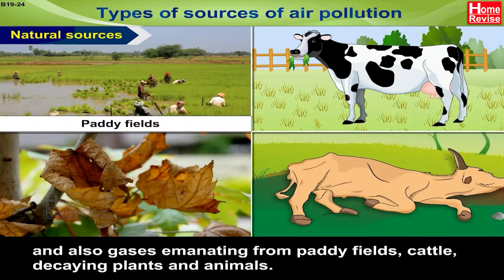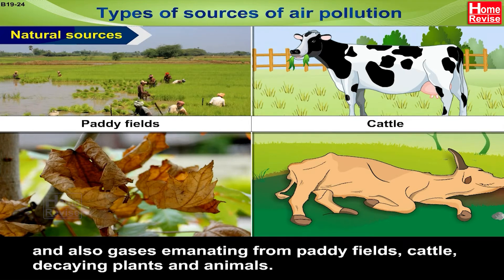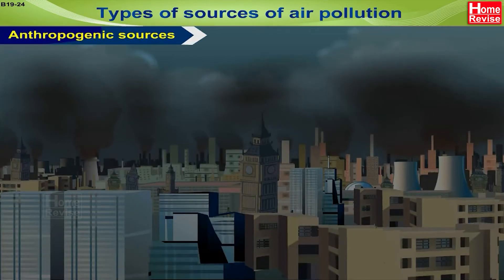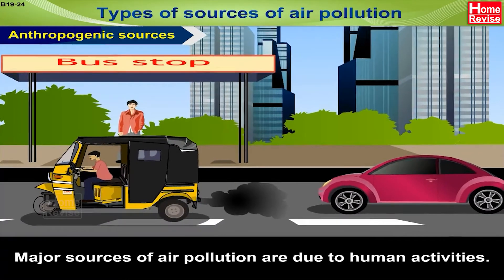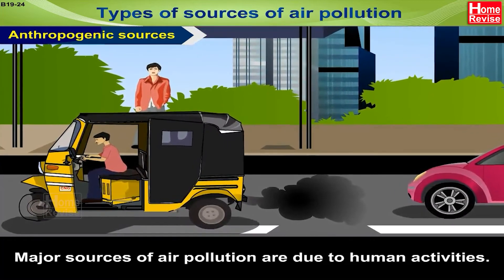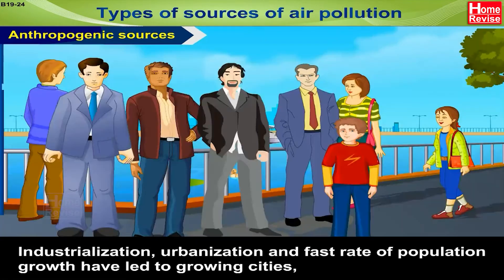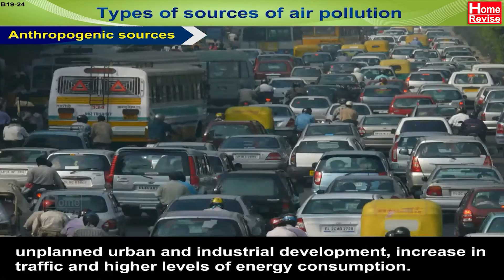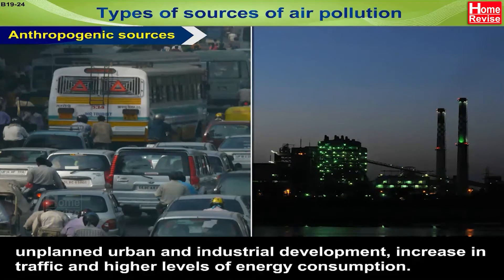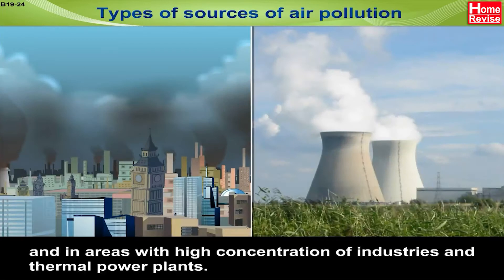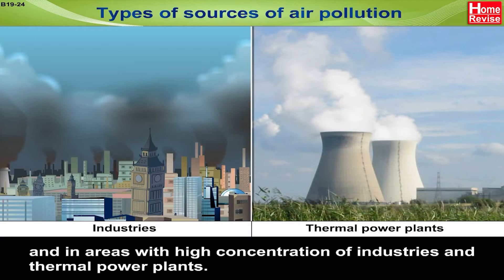Gases also emanate from paddy fields, cattle, and decaying plants and animals. Anthropogenic sources are the major sources of air pollution due to human activities. Industrialization, urbanization, and fast population growth have led to growing cities. Unplanned urban and industrial development, increased traffic, and higher energy consumption have contributed to air pollution widespread in urban areas and areas with high concentrations of industries and thermal power plants.